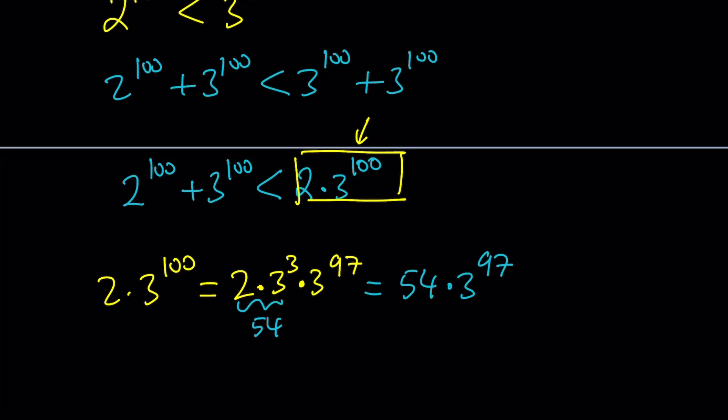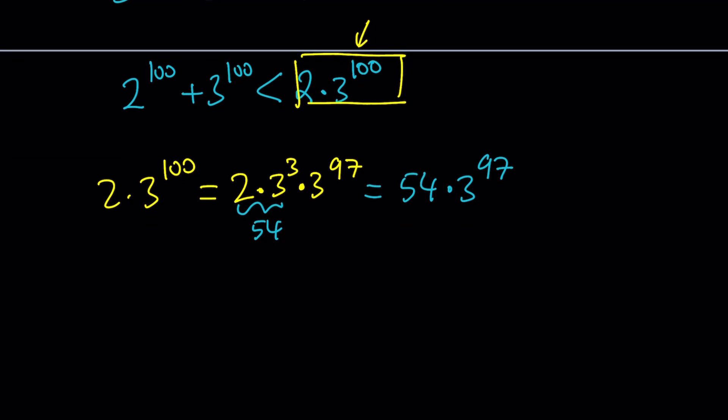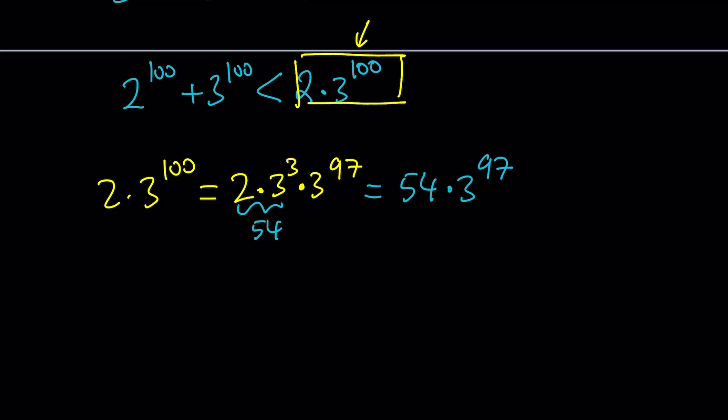Now, why is it important? Why did we separate the 3 to the power 100 into these two pieces? We want to be able to compare this to 4 to the power 100, and for that we're actually going to break down the 4 to the power 100 the same way. The reason why we do that is, if you think about it, 3 to the power 97 is less than 4 to the power 97. If you multiply both sides by 3 to the power 3, obviously the right hand side is bigger. But what happens if you multiply this side by 3 to the third and this side by a larger number? When you multiply the larger side in an inequality by a larger number, it's still going to be larger.